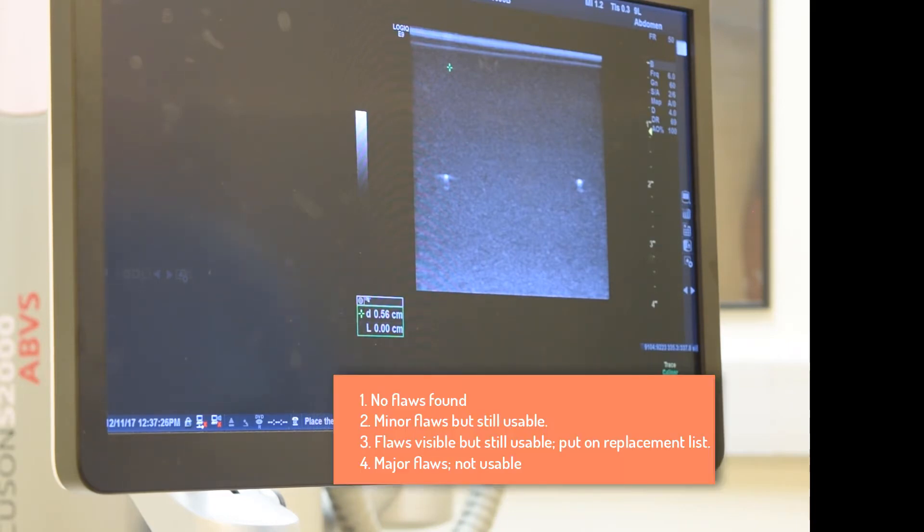We utilize a four-point rating scale when we evaluate our transducers. Number one, no flaws found. Number two, minor flaws, but the transducer is still usable. Three, flaws are visible but still the transducer is usable. And fourth, replace the transducer. In the image on the left, we have an example of a curvilinear array transducer where we see three different flaws emanating from the surface of the transducer.